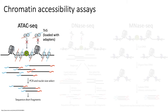TN5 basically goes in and randomly cleaves parts of open or accessible chromatin. Whenever it cleaves the genome at these accessible positions, it inserts sequencing adapters into these freshly cleaved regions. The sequencing adapters act as a probe for measuring where chromatin was accessible, because TN5 is biased towards cutting open chromatin.